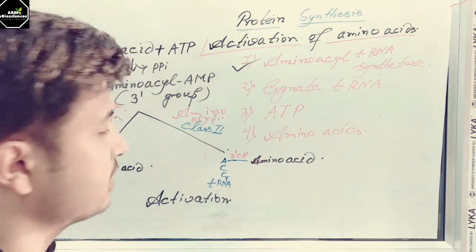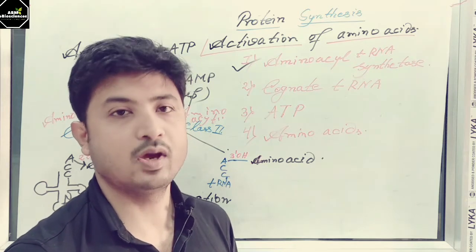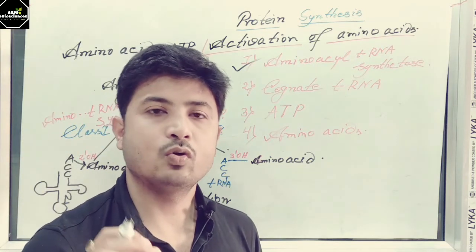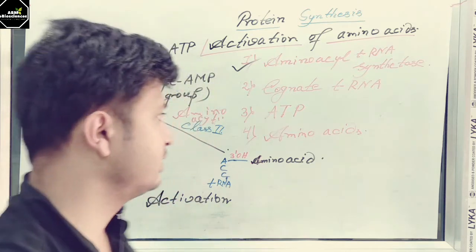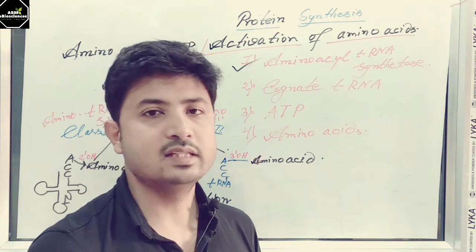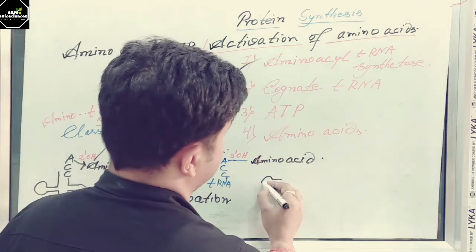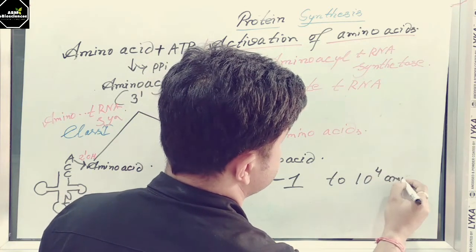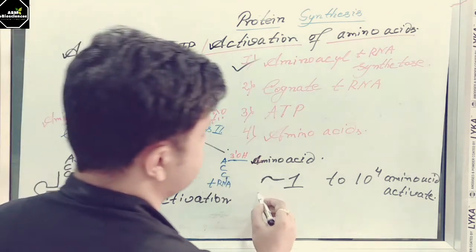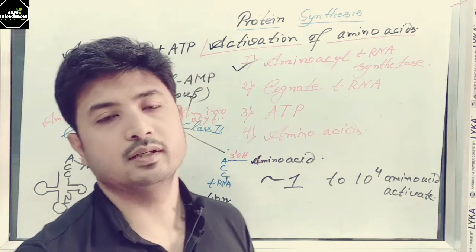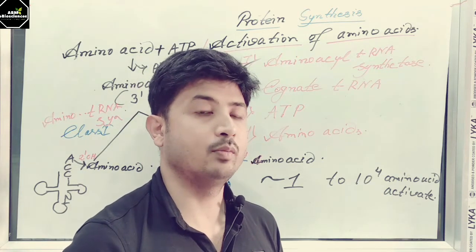Behind the scenes there are several things you should know — that is the fidelity of protein synthesis. What is the error rate of protein synthesis? How is it controlled, and where is it controlled? During protein synthesis, ribosomes do not check whether the tRNA is attached to the proper amino acid. There are three filters used during activation of amino acids, and these three filters reduce the chances of protein synthesis error. The error rate is around 1 in 10 to the power of 4 amino acids activated.